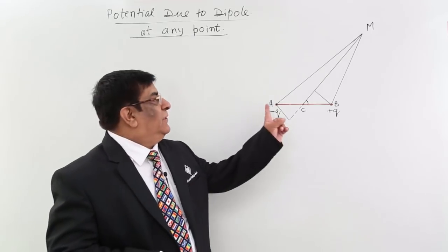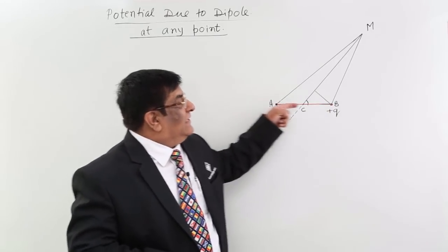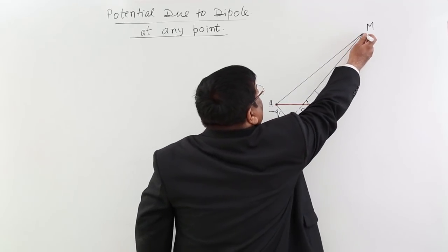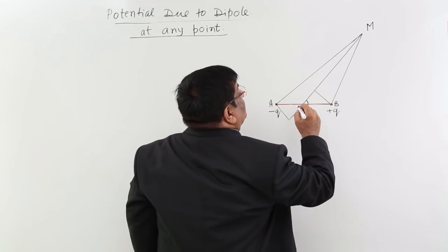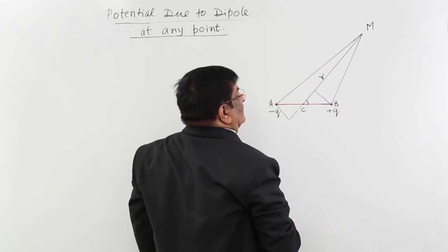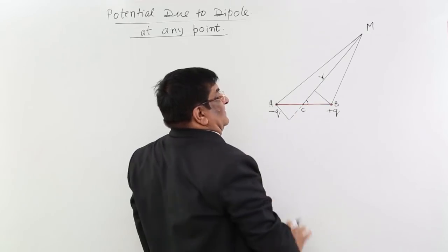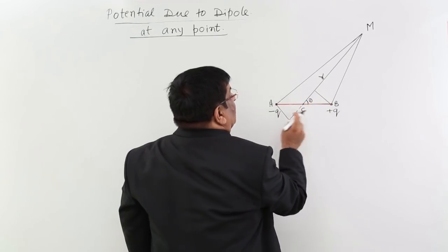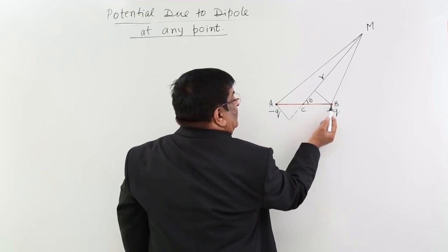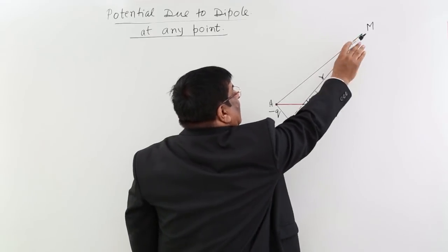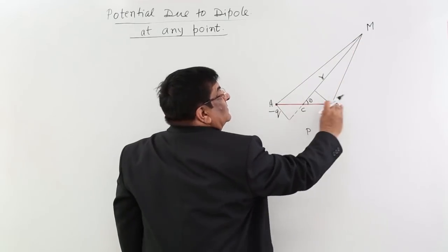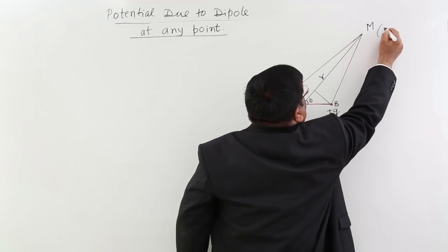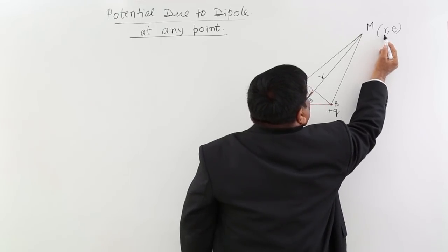We are studying the potential due to a dipole, and the point we have taken is neither on the axial line nor on the equatorial line — it is at any general place. We define that point as being at a distance r from the dipole, measured from the center point C. The position vector r makes an angle theta with the dipole moment. The dipole moment has a direction from minus to plus, and the point M is at an elevation of theta from the direction of the dipole moment. The two specifications of this point are r and theta: the position vector and the angle of elevation.